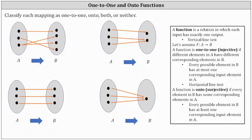In this lesson, we will classify mappings as one-to-one functions, onto functions, both, or neither. For a quick review, a function is a relation in which each input has exactly one output.